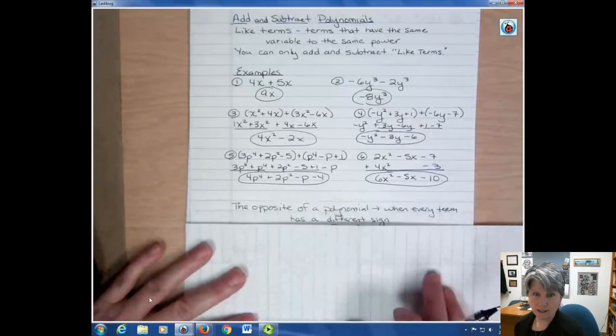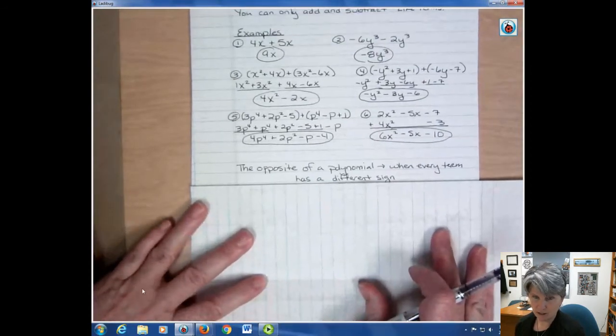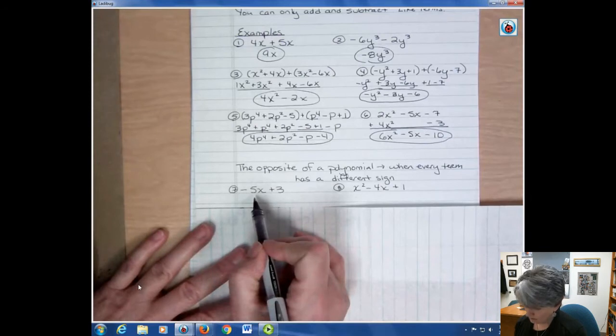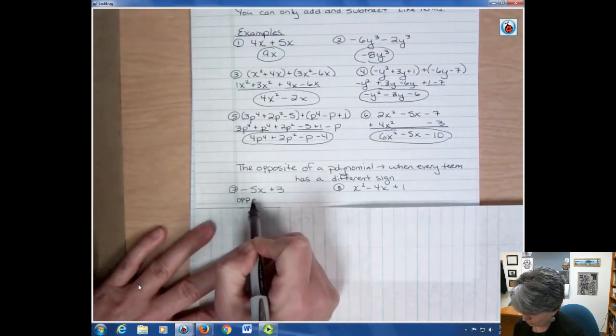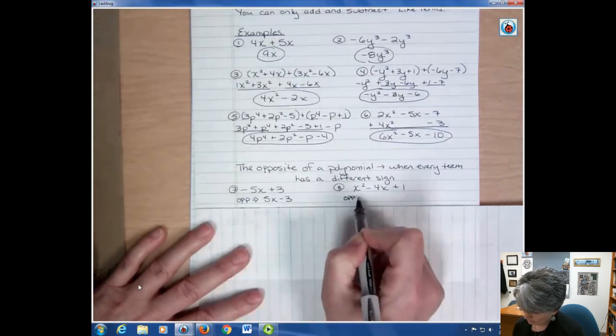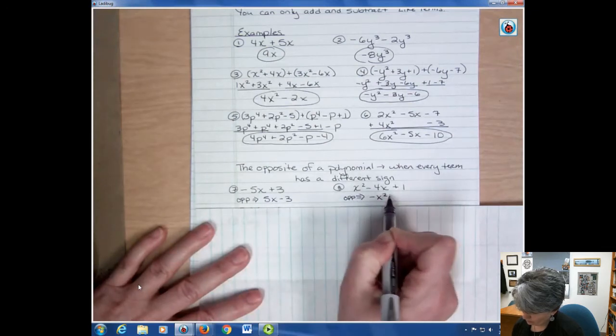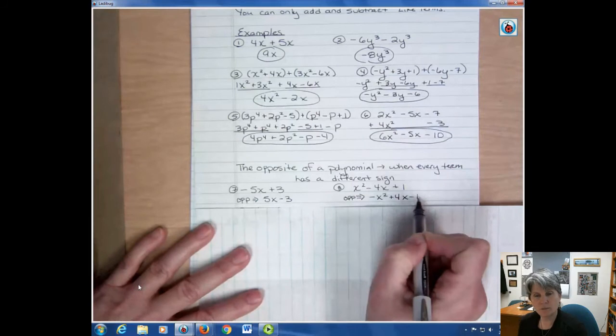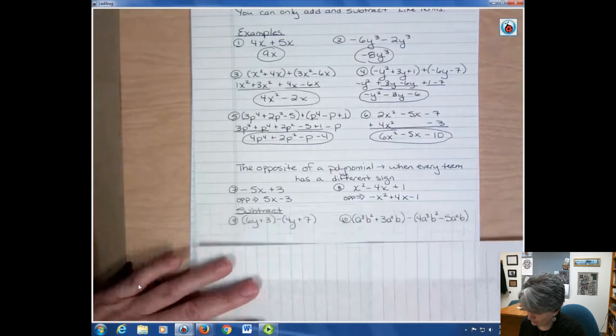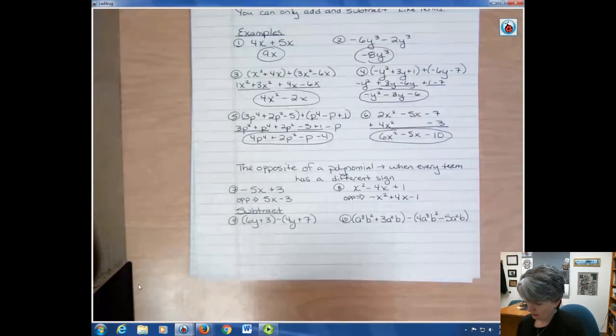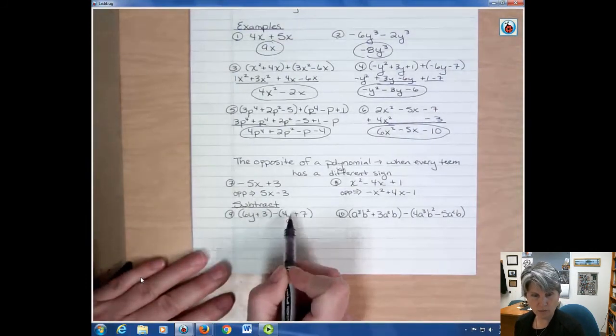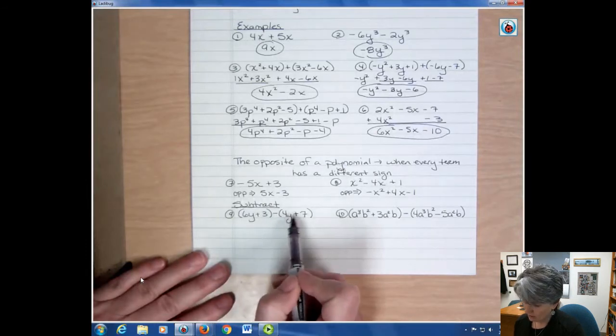I want to talk about the opposite of a polynomial. When every term has a different sign, you have an opposite. So if this is my polynomial to start with, the opposite of that would be positive 5x minus 3. And the opposite of this would be negative x squared, positive 4x, and minus 1. When I say the opposite, it just means change the sign of everything. And so when we're subtracting, that's what we're doing. We find the opposite of the second term. We're actually distributing a negative 1 through there. But distributing a negative 1 is the same as saying find its opposite.